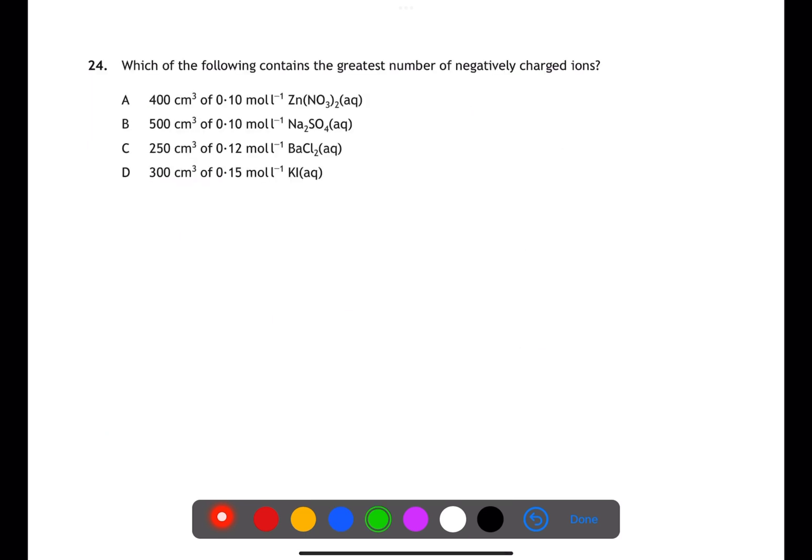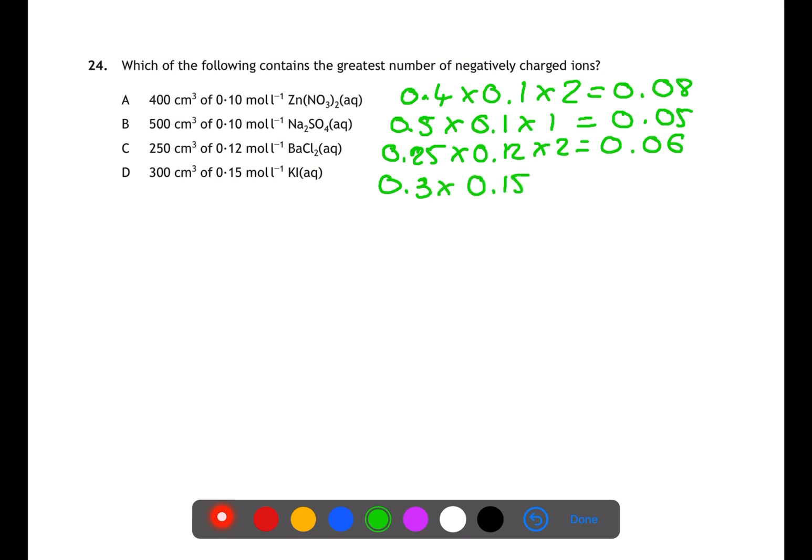For question 24, we're looking for the greatest number of negatively charged ions. For the first one we're going to calculate concentration times volume, volume being in litres, and multiply by the number of negative ions in the equation, which is 2. For B we're going to do the same. However, the number of negatively charged ions in the formula is only 1. For C we again have two negatively charged ions, and for D we only have one. This means that the substance with the greatest number of negatively charged ions is zinc nitrate A.